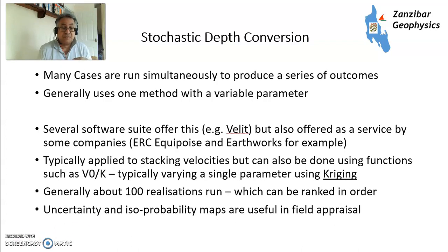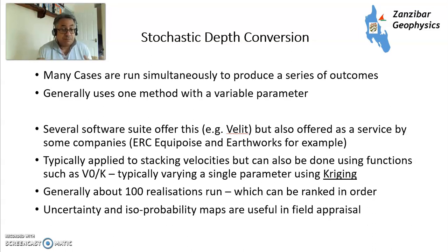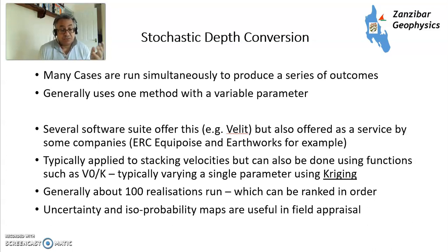Within a stochastic approach you use one method and run many cases within it using different types of parameter variability, using a technique called kriging, which I'll talk about in a minute. There are several software suites that can do this — for example Velet, which is now part of the Kingdom suite, developed by ERC Equipoise. Typically you vary a single parameter — so in a V0K function you'd vary the V0 stochastically using kriging. Generally you'd run about 100 realizations, though you get diminishing returns after a while. You can then rank them in order and produce things like isoprobability uncertainty maps, which are very useful in field appraisal.